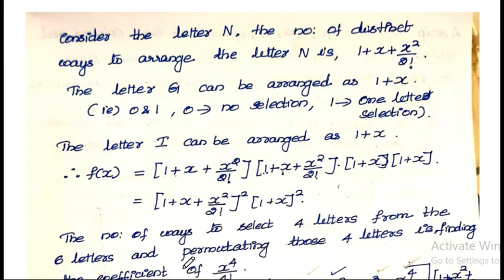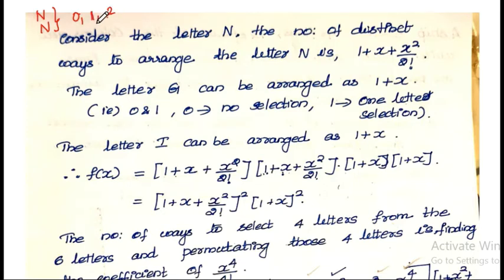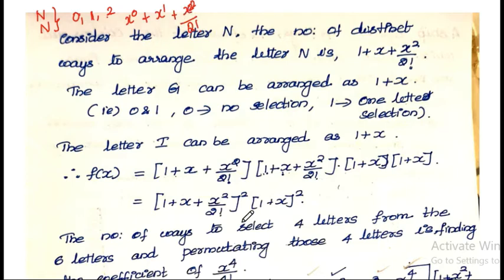Next we consider the variable N. N is not selected — that is 1 (x raised to 0). One N is selected — that is x raised to 1. Two N's are selected — that is x-squared divided by 2 factorial. So the EGF for N is: 1 plus x plus x-squared divided by 2 factorial.